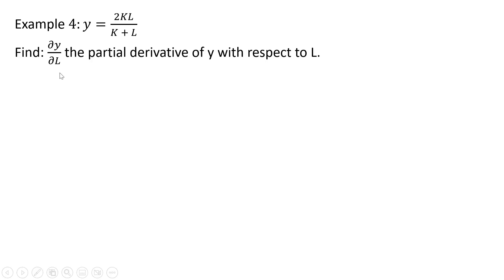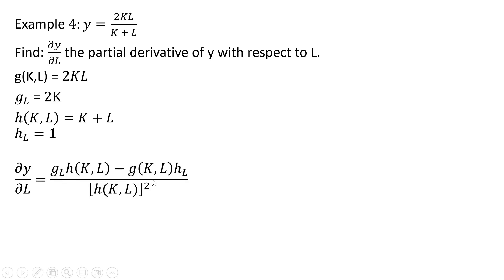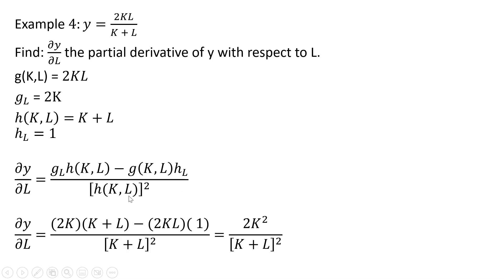Now let's consider this function. We're going to find the partial derivative of the y function with respect to l. The g function here is the numerator, and the partial derivative of that with respect to l is 2k. Our h function is what we have in the denominator — h is a function of k and l — and the partial derivative of h with respect to l is just 1. Here's our rule: we take the partial derivative of the numerator with respect to l and multiply that by the denominator, then subtract the numerator multiplied by the partial derivative of the denominator, with the denominator squared. Making our substitutions and simplifying, we get the following result.